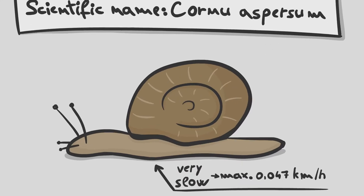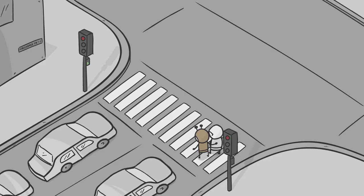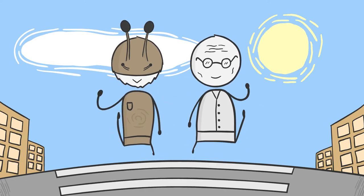Well, first off, garden snails obviously move extremely slowly, so you would be able to help an old person cross the street and call it a light jog.